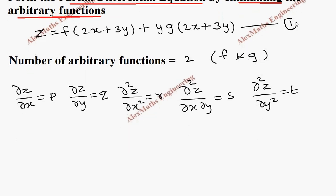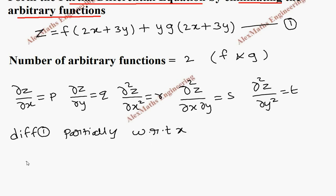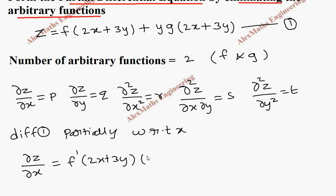Let's take the first expression and differentiate it partially with respect to x. So this becomes dou z by dou x equal to f dash of (2x + 3y) and, as per the chain rule, it will be into 2. Here y is treated as a constant, and g derivative is g dash of (2x + 3y) into 2.